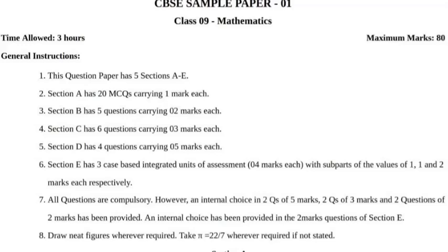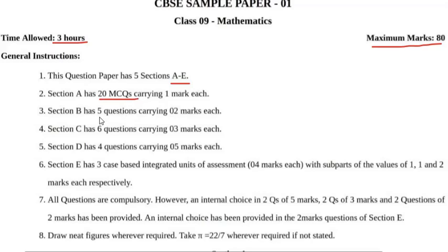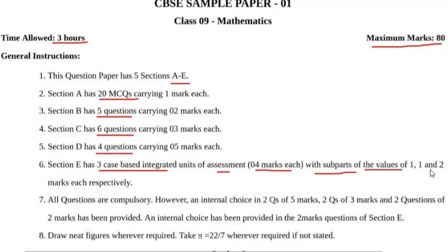Let's see the instructions. Maximum marks 80, time allowed 3 hours. This sample paper has 5 sections A to E. Section A has 20 multiple choice questions. Section B has 5 questions. Section C has 6 questions. Section D has 4 questions. Section E has case-based integrated unit of assessment, 4 marks each with sub-parts of 1, 1 and 2 marks each respectively.